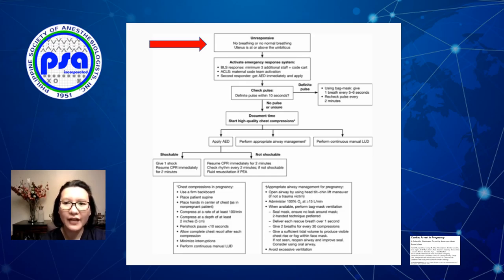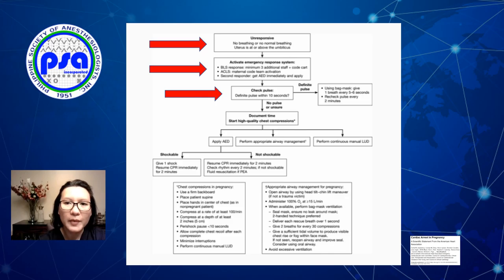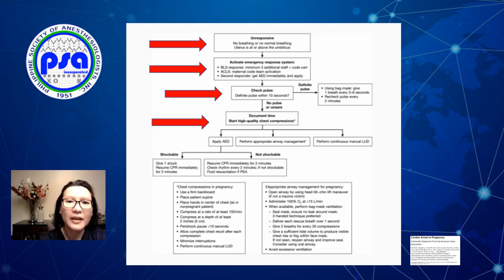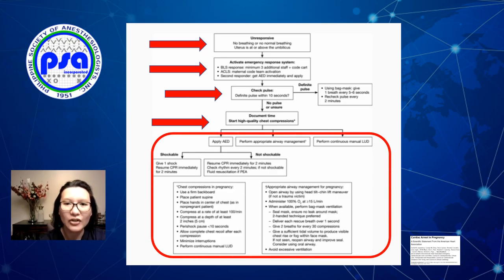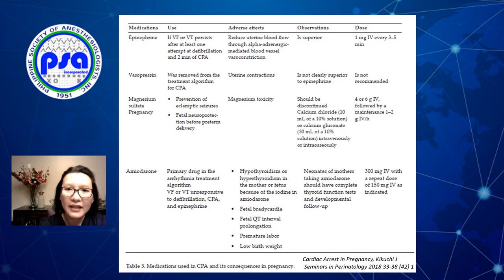Let's summarize the first four minutes. The patient is unresponsive with no breathing or abnormal breathing. Call for help to activate the emergency response system and ask for at least four people: the anesthesiologist as team captain and airway specialist, a second member to give compressions, another to provide left uterine displacement, and another to provide medications. Check for pulse — if no pulse, start chest compressions and document the time. Simultaneously perform airway management, continue left uterine displacement, apply an AED if available, and provide defibrillation and appropriate medications.